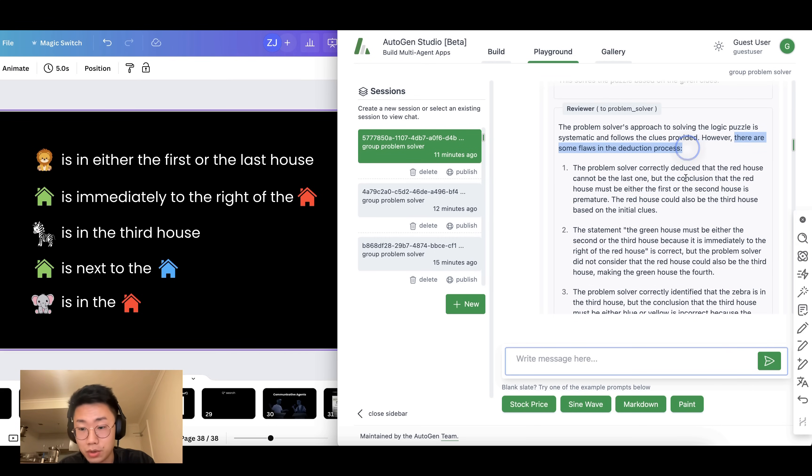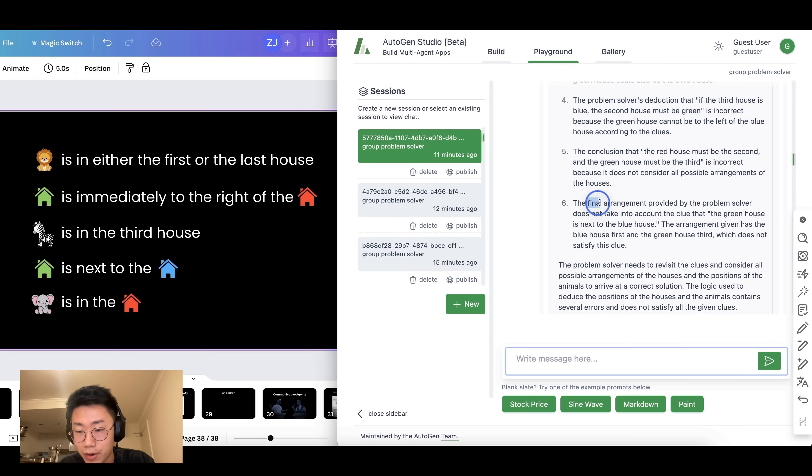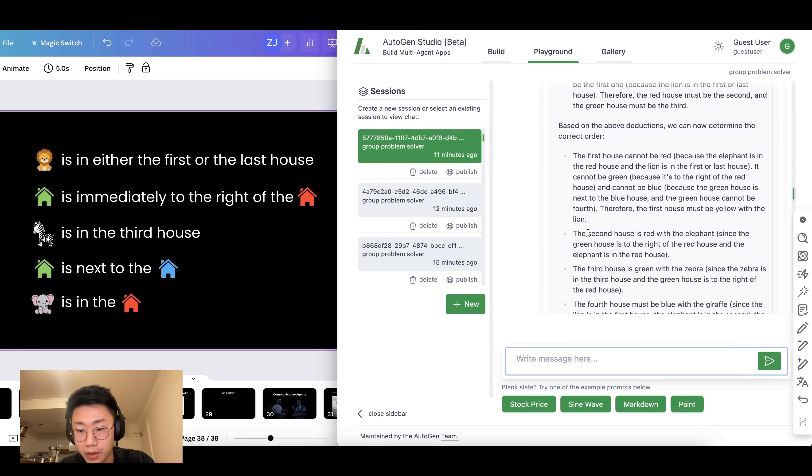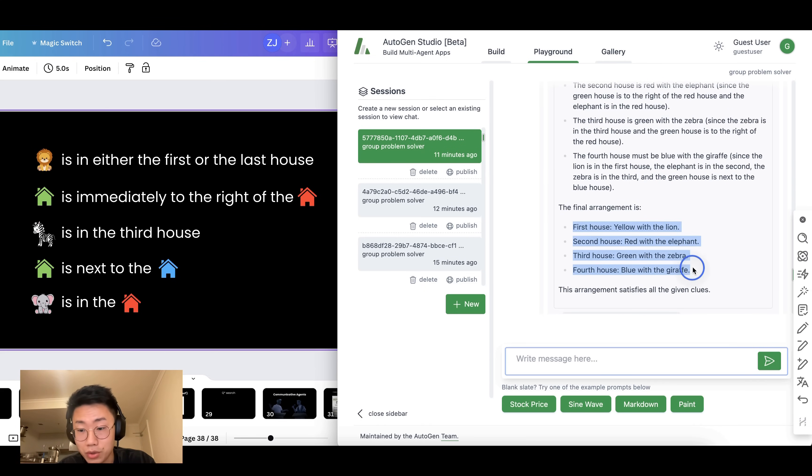And also pointed out that the final arrangement didn't really take into account the clue that the green house is next to the blue house. And then the problem solver takes this feedback, tries again. And this time it comes up with a new answer. And let's compare again. So the lion is either first or last, which is correct. The green house should be immediately to the right of the red house, which is also correct. The zebra is in the third house. The green house should be next to the blue house. Elephant is in the red house. This is a correct answer.